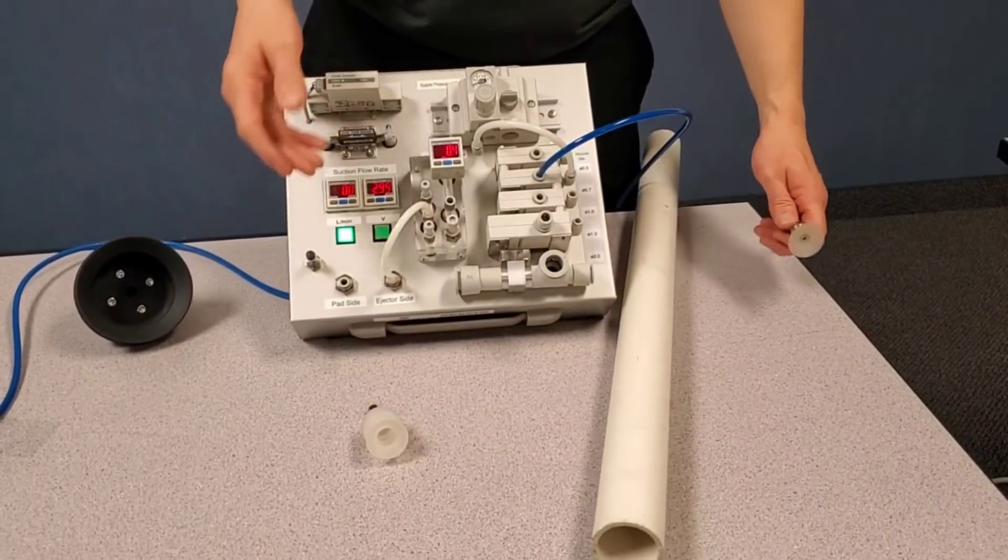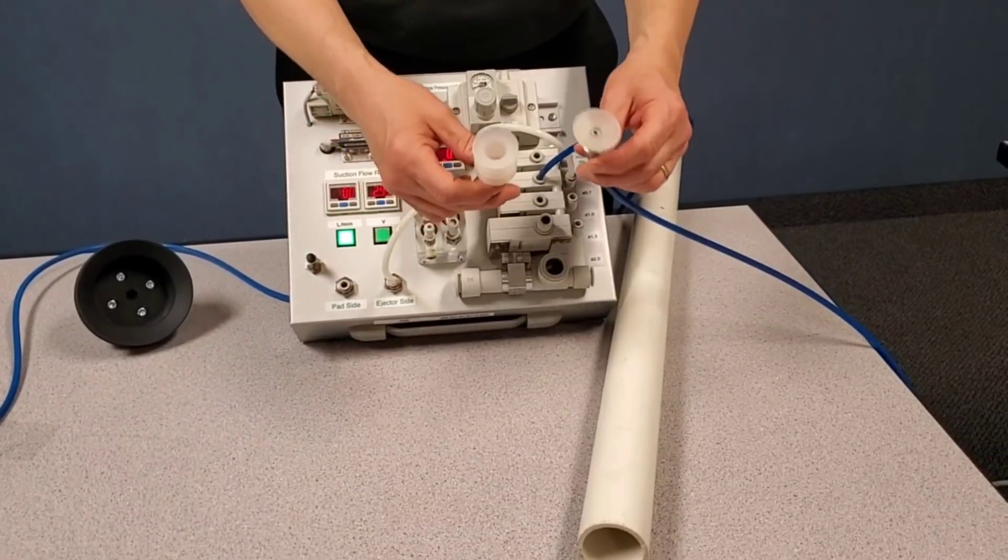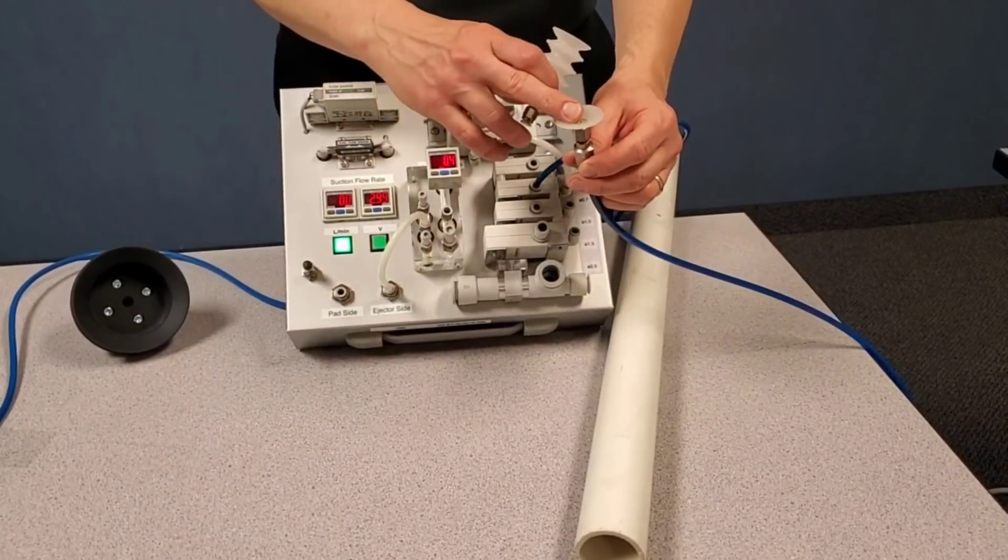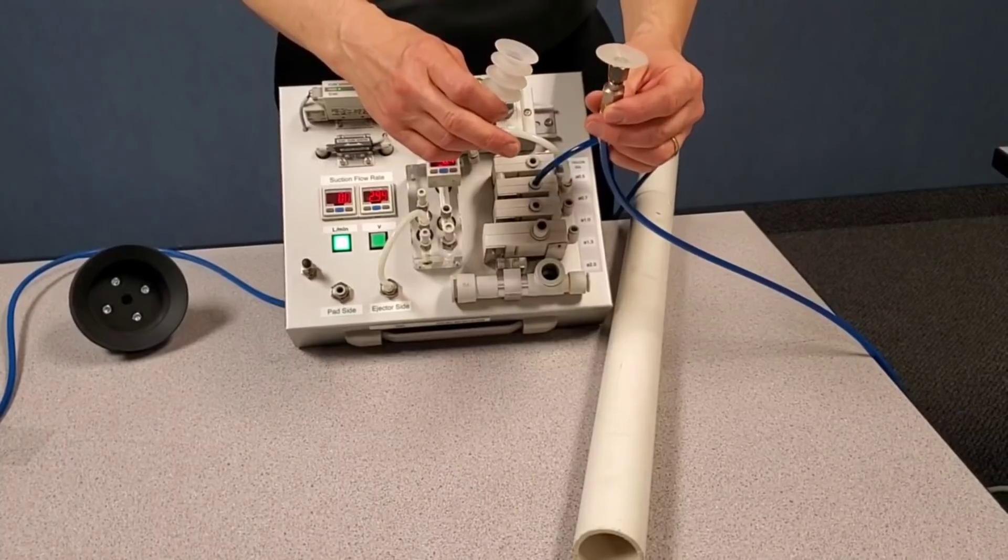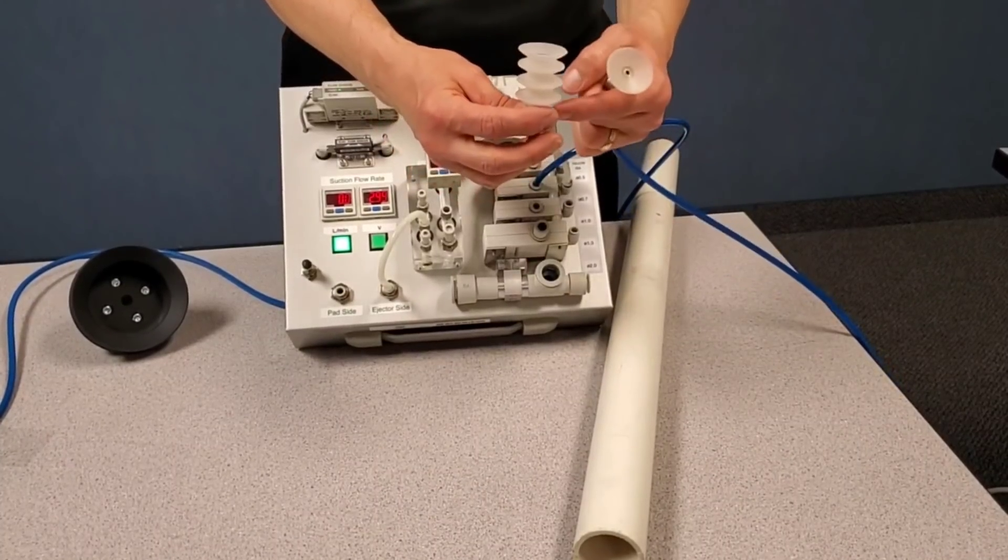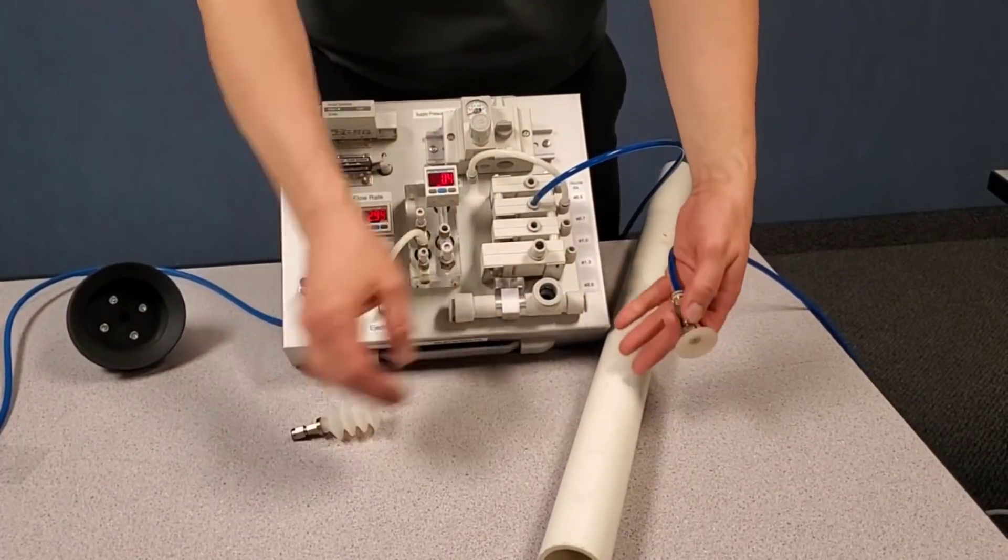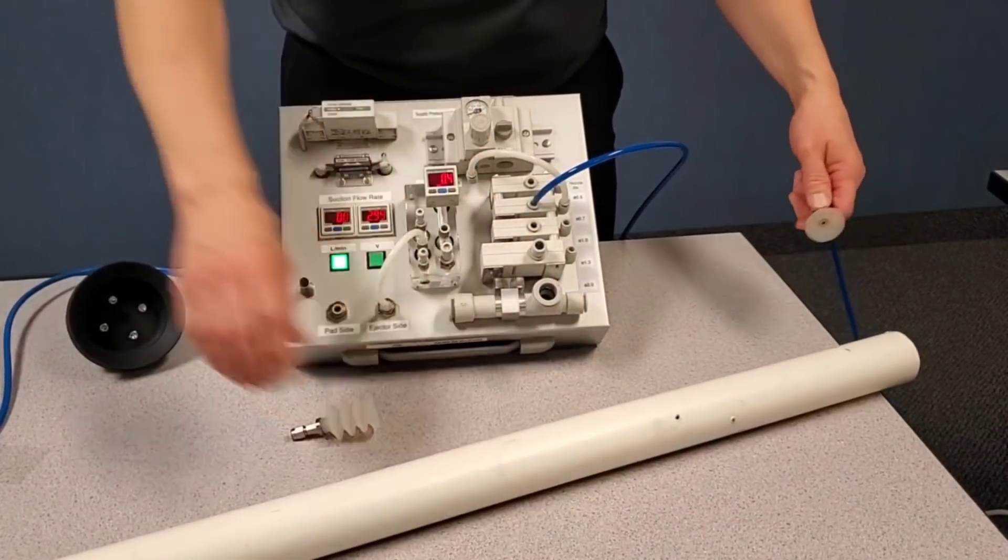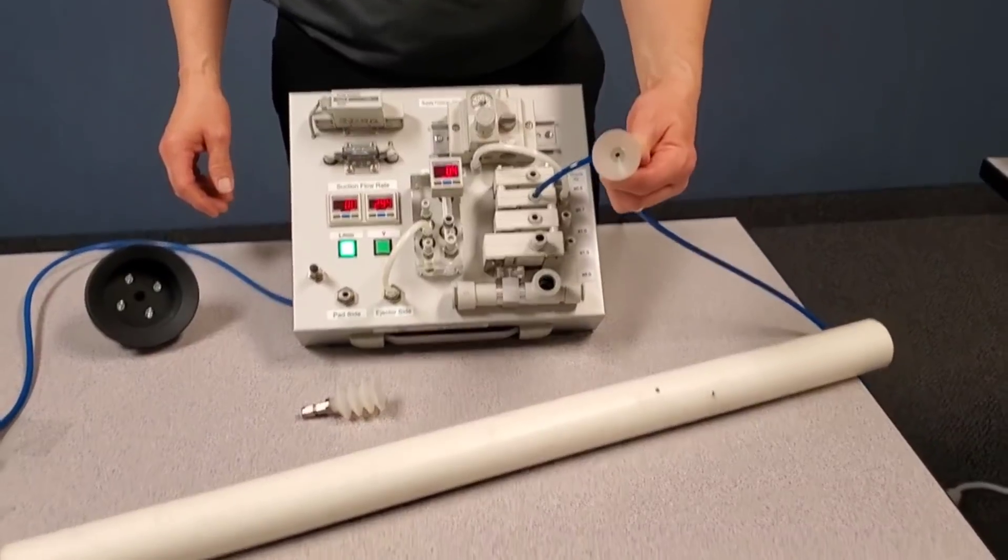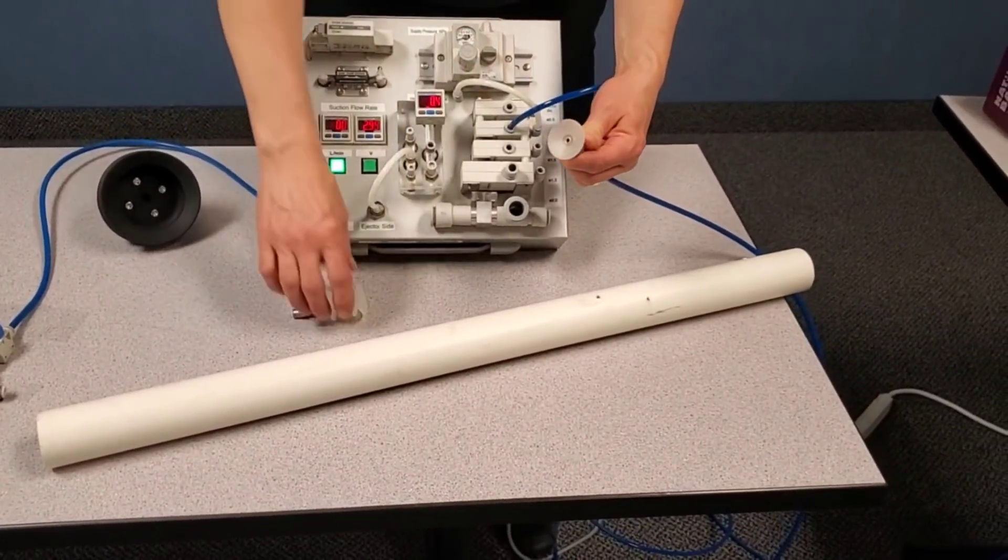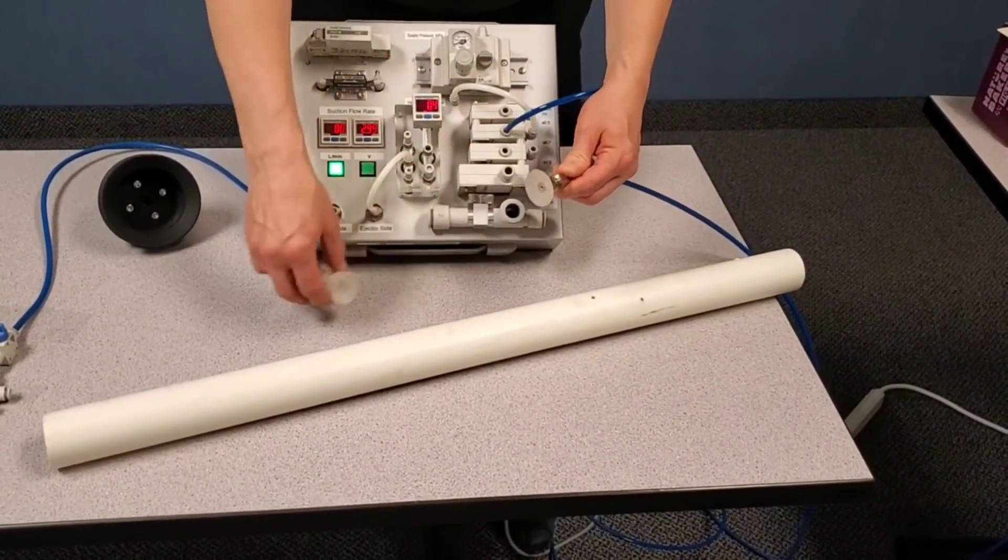Our next demonstration is comparing your selection between either a flat 32 millimeter cup or a multiple bellows 32 millimeter cup to pick up an object with a round surface. Let's use our inch and a half PVC pipe. Here's a 32 millimeter cup, silicone material, also silicone material.